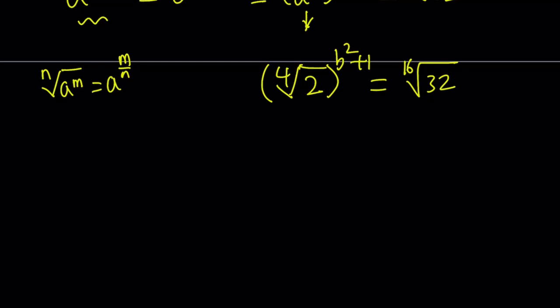But anyways, we can go ahead and write this as 2 to the power 1 4th and then raise it to the power b squared plus 1. And then write this as 2 to the power 5 and then raise it to the power 1 over 16, right? You can kind of write it like this. Now, why are they different? Because we have a power on the outside, so I left it outside. But in the second case, we have a power inside the radical, so I kept it inside the radical. Make sense?